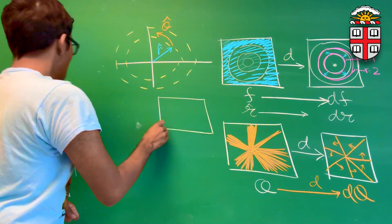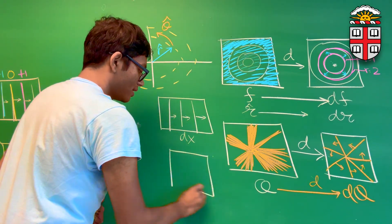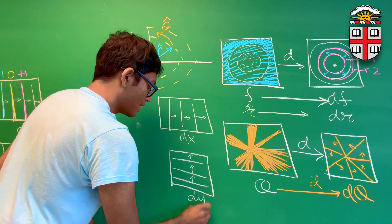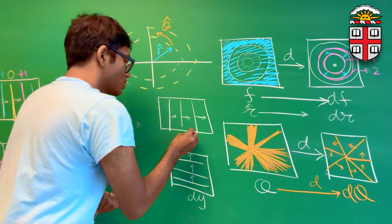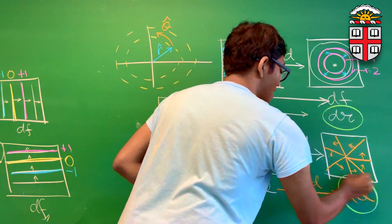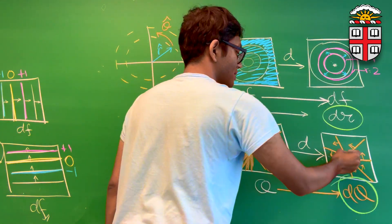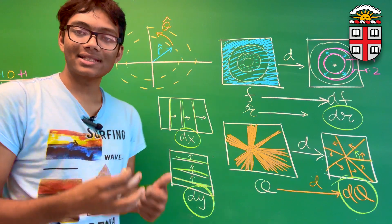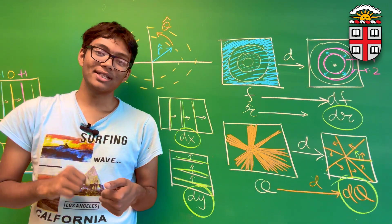DX looks like a bunch of vertical lines increasing as I move to the right, and DY looks like a bunch of horizontal lines that increase as I go up. So this is the new world — this is how differentials look like from now on. Differentials are no longer tiny infinitesimal changes in a variable. Instead, they are entire co-vector fields: co-vector fields made out of contour circular lines, radial lines, vertical and horizontal lines. That is the moral of today's story. Thank you for watching this episode of General Relativity. I hope you've learned something new and we'll see you in the next one.